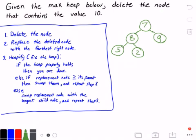So in this case, the node that contains the value seven has two children: the node that contains eight and nine. And the one that has the larger value is the node that contains the value nine, so we're going to swap the seven and the nine. Okay, so nine and seven.